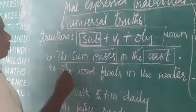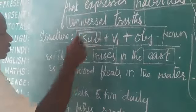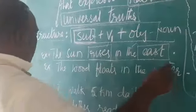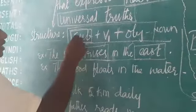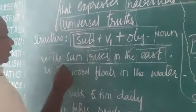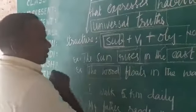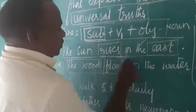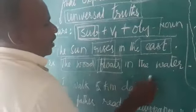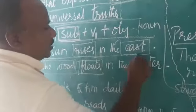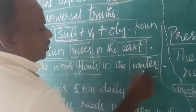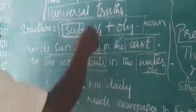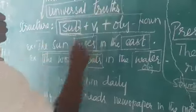We will go with one more example of universal truth. 'The wood floats in the water.' If you look at this sentence, 'the wood' is the subject, 'floats' is the V1, and 'water' is the object. I think you understood. Let's go back to habitual actions.